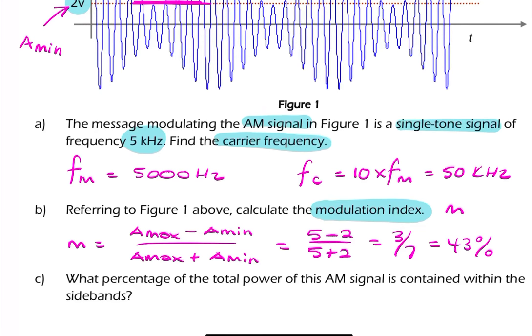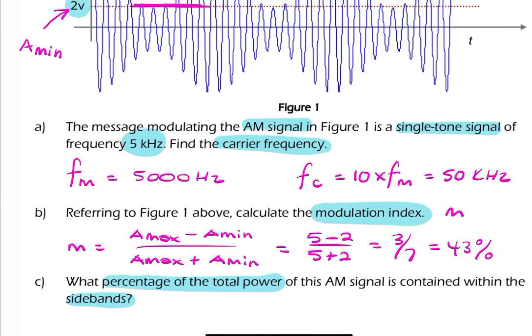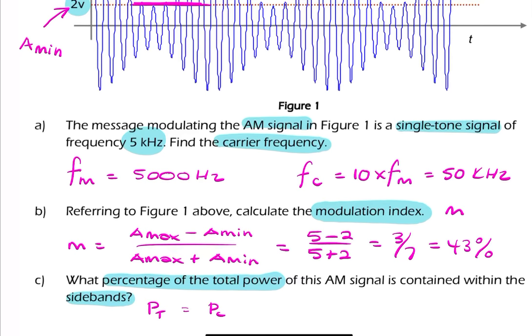Part C says, what percentage of the total power is contained within the sidebands? Now remember, the AM signal contains sidebands and contains the carrier. So the total power is the carrier power plus the sideband power. The useful power, in terms of information or message, is the sideband power. And the question here is asking, what percentage of the total power is in the sidebands? So in other words, it's saying, what's the power in the sidebands divided by the total power times 100%?